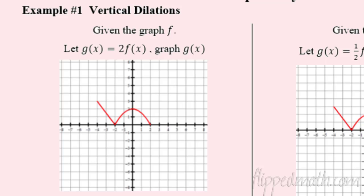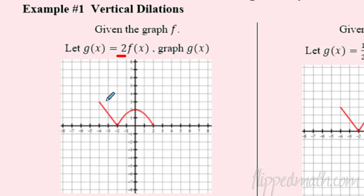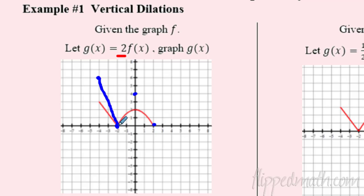Let's start by dilating vertically. Looking at this function, I'm going to take all the Y values and double them. This point is at three, so doubling it takes it to six. The point at zero stays at zero — doubling zero is still zero. The point at two in the Y direction goes to four. The last one is at zero so it stays at zero. Now connecting the dots, you can see how it got stretched vertically.